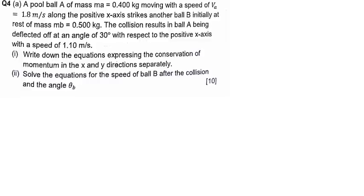If you remember, I said the speed of ball A initially is going to be greater than the speed after the collision. We can see here — it was 1.8, now it's 1.1. At the same time, we don't expect the speed of ball B, the final value which we are going to find, to be greater than 1.1.